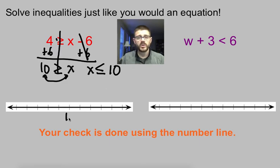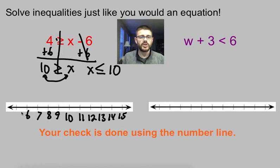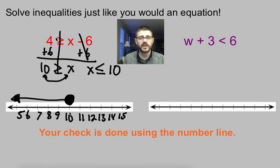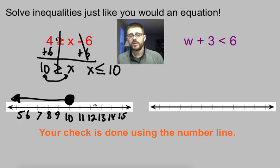That 10 goes in the middle of our number line, and then we just number it going up and down — basically creating a small chunk of a number line. We want less than or equal to, so we're okay being equal to 10. We use a closed circle because it's okay to equal 10, and then x is less than 10, so I'm going to shade going to the left. Same as with an equation — we just have to graph it on a number line when we're done.